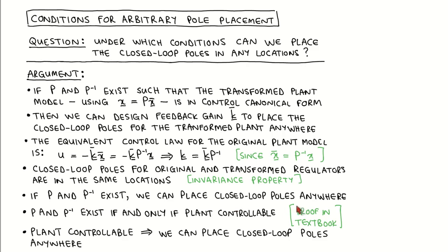It is possible to prove that such a transformation matrix P exists if and only if the plant is controllable. We do not prove this step in the video; refer to the textbook for its proof. Putting everything together, we can conclude that if the plant is controllable, then we can place the closed loop poles anywhere.